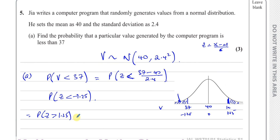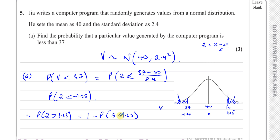The table gives us the area to the left of a Z value. We need the area to the right of 1.25, which is 1 minus the probability that Z is less than 1.25. The table gives us the cumulative area up to 1.25, and we subtract that from 1 to get the area we're looking for.